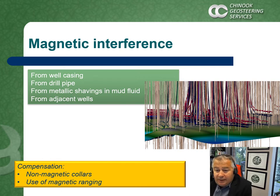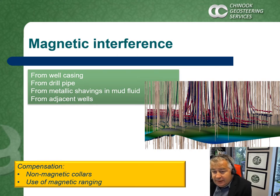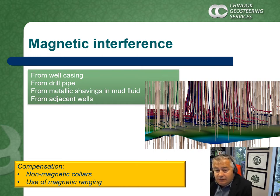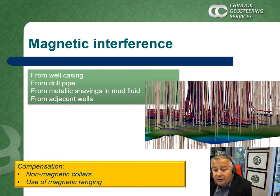Metal drill pipe or casing directly affects survey readings. It is the reason why survey tools are normally placed in non-magnetic collars, but wells drilled in immediate proximity of other cased wells have severely skewed surveys. This is why magnetic ranging is used instead of surveying when drilling injector wells in SAGD applications. Reverse surveys calculated from reference magnetic ranging at the end of the lateral are used for well placement imaging instead of traditional surveys shot while drilling.